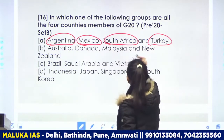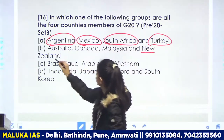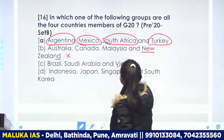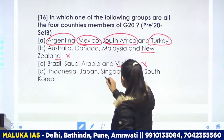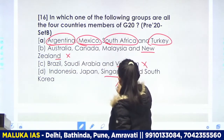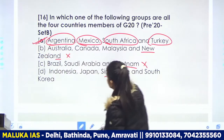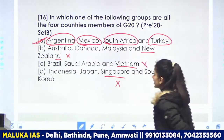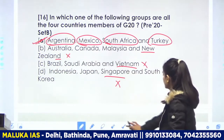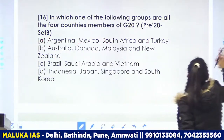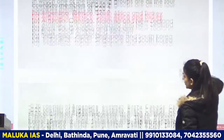Yahan par New Zealand nahi tha, Vietnam nahi tha, Singapore nahi tha. So hamara answer ho jaata hai A — Argentina, Mexico, South Africa, and Turkey. Yes.